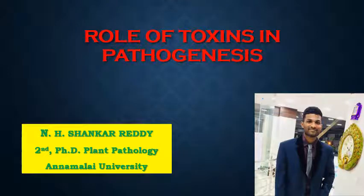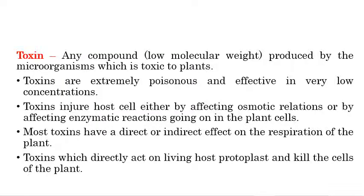We will look at the role of toxins in pathogenesis and the different types of toxins produced by plant pathogens. A toxin is any compound produced by a microorganism that is toxic to plants or any living system. Toxins are typically low molecular weight compounds produced by microorganisms like fungi, bacteria, and viruses, and are extremely poisonous even at very low concentrations.